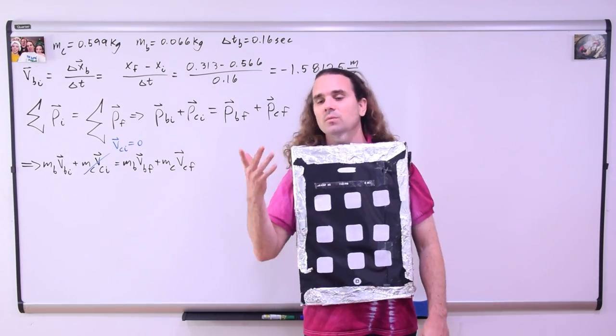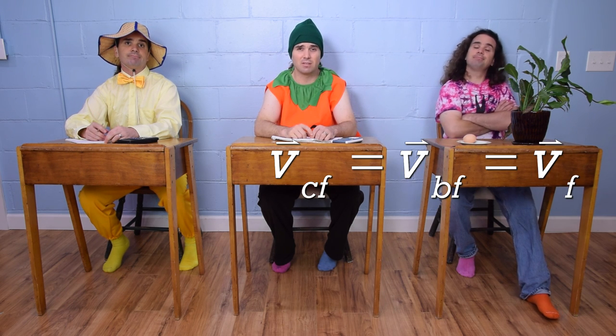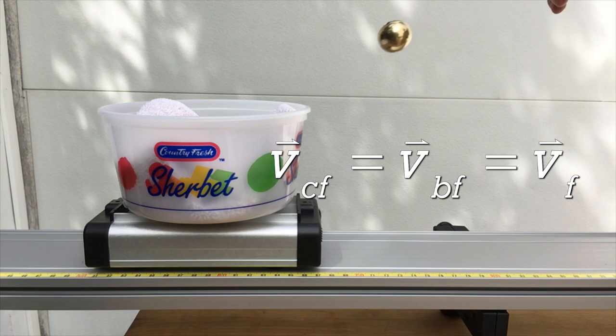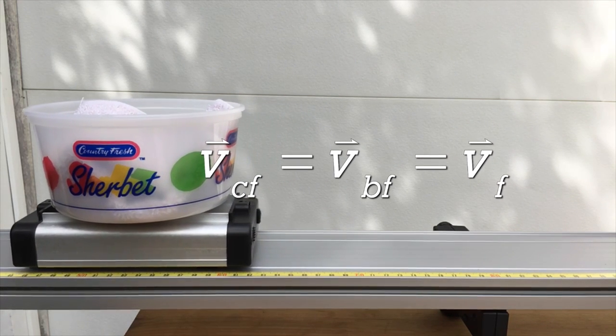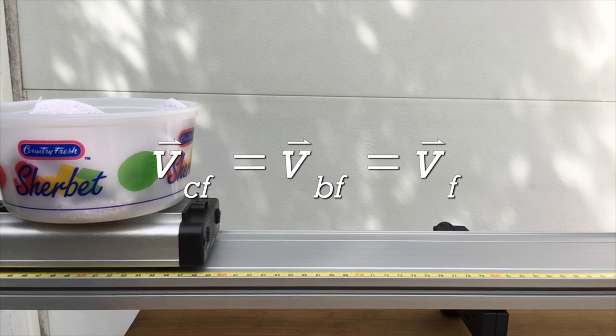Isn't the brass ball inside the cart after the collision? So don't the brass ball and the cart have the same final velocity? Correct, Bobby. Because the ball is in the cart after the collision, the final velocity of the ball and the final velocity of the cart are the same.